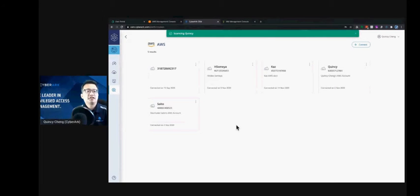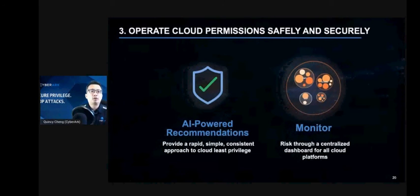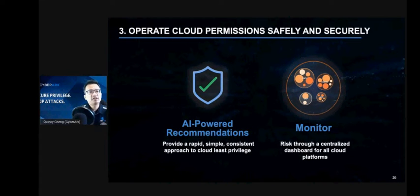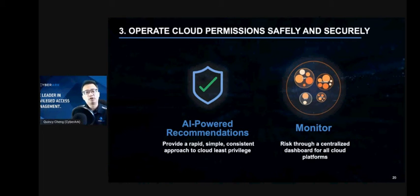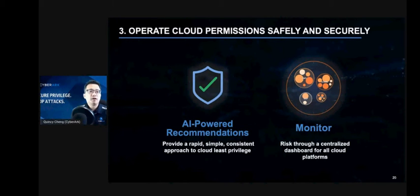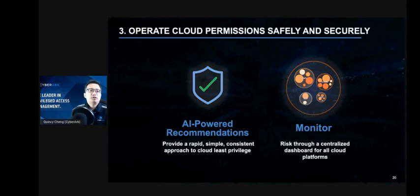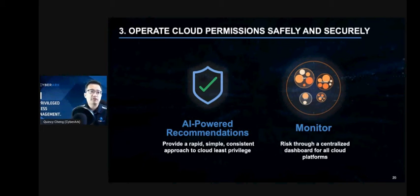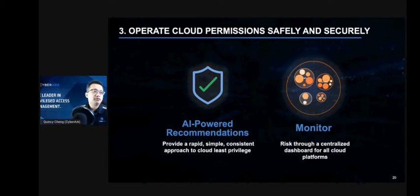Let's continue to our slide. The first benefit is, of course, enabling least privilege. This allows organizations to move forward in their digital transformation and confidently adopt advanced services from various providers. AI-powered recommendations ensure all permissions are revealed while taking the guesswork out of crafting a new policy that supports least privilege. Organizations can easily and continuously monitor risk at the platform, environment, or identity level.